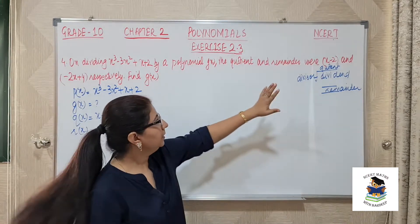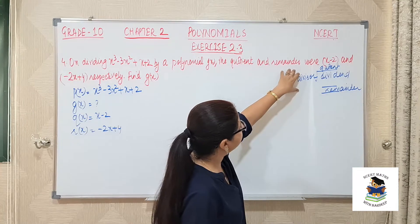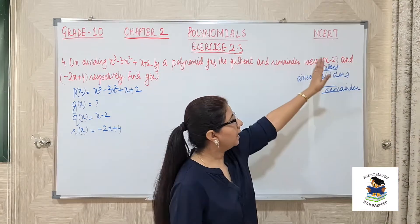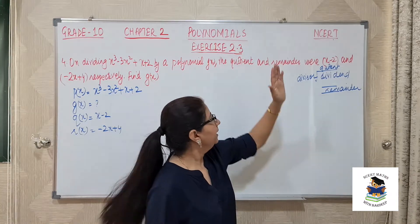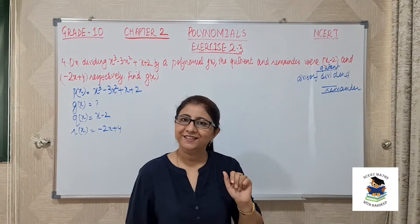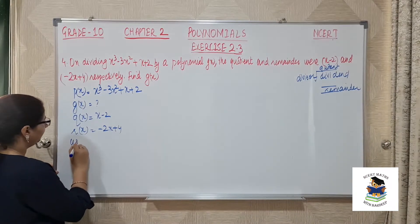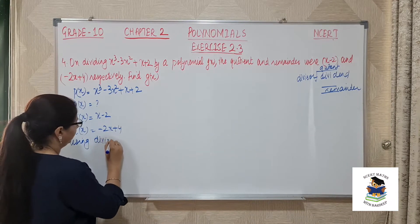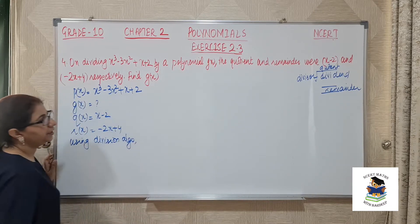According to division algorithm, dividend is always equal to the product of divisor and quotient. Then whatever answer we are getting, we should add remainder. That is, divisor into quotient plus remainder will always give us dividend.